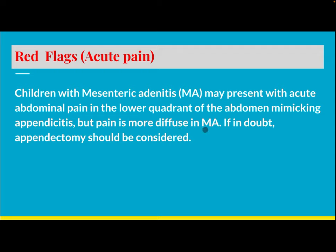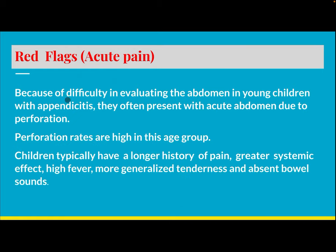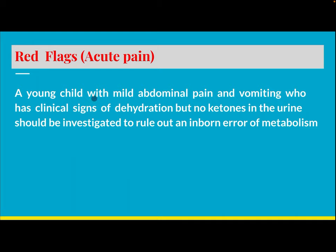Pain is more diffuse in mesenteric adenitis than appendicitis — if in doubt, appendectomy should be considered. Young children with appendicitis often present with acute abdomen due to perforation, as perforation rates are higher in this age group. Children typically have a longer history of pain, greater systemic effect, high fever, more generalized tenderness, and absent bowel sounds. A young child with mild abdominal pain and vomiting with clinical signs of dehydration but no ketones in urine should be investigated to rule out an inborn error of metabolism.